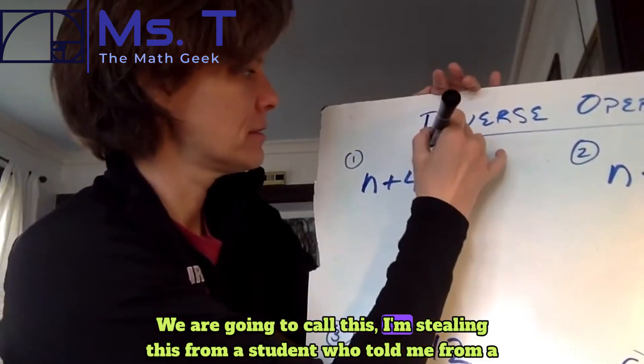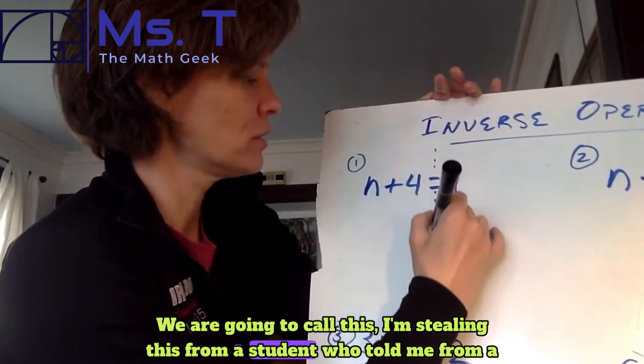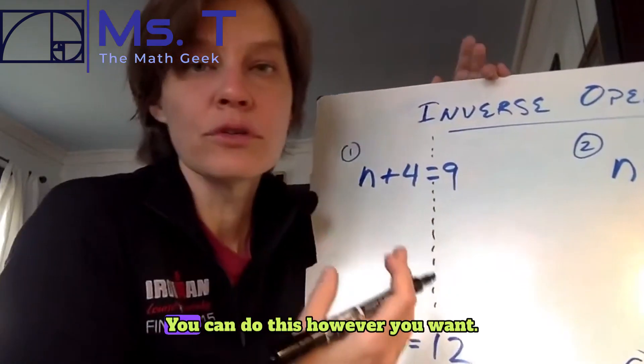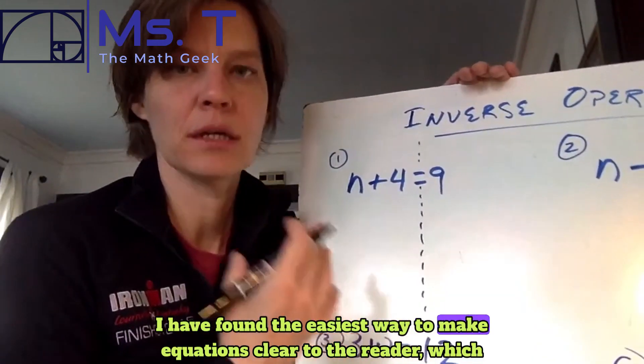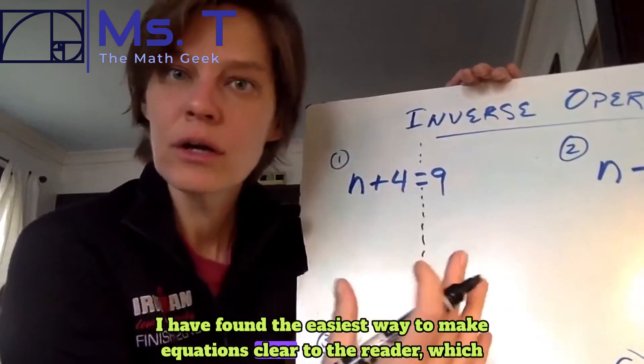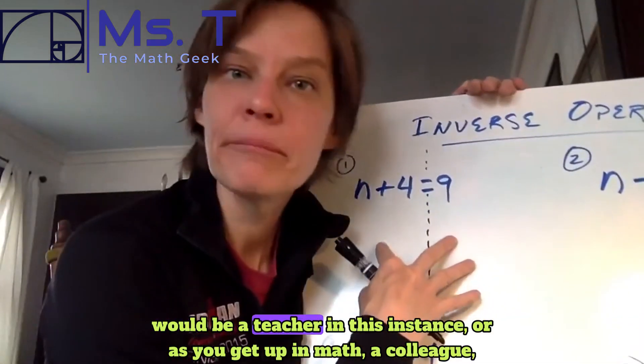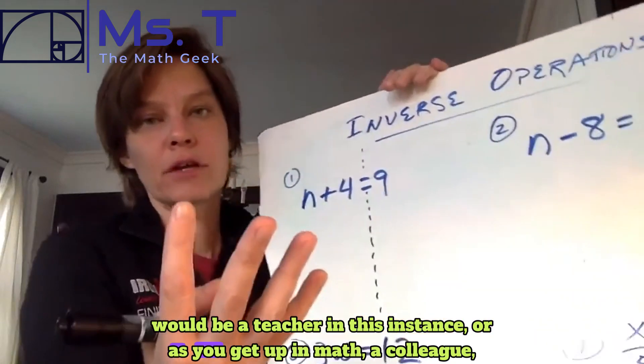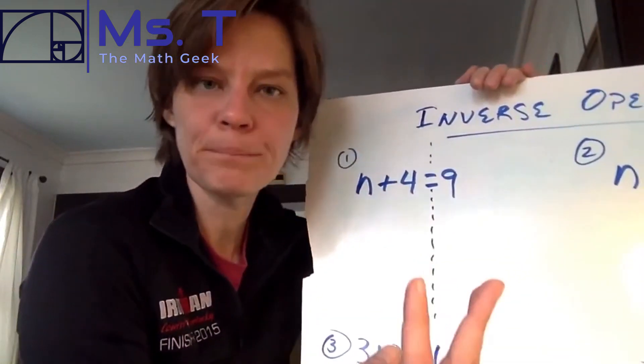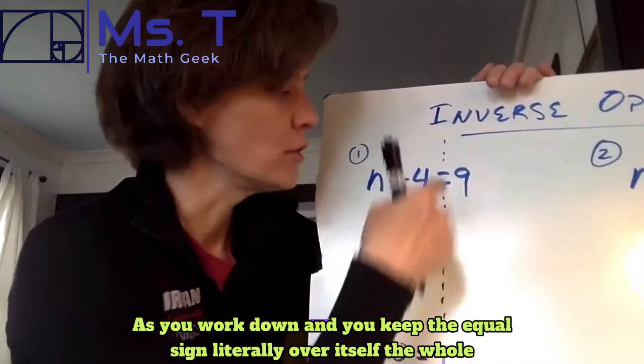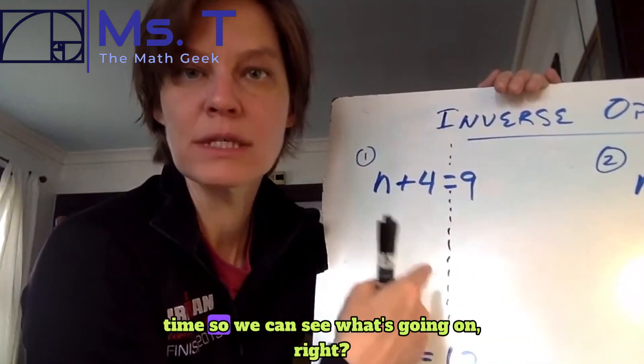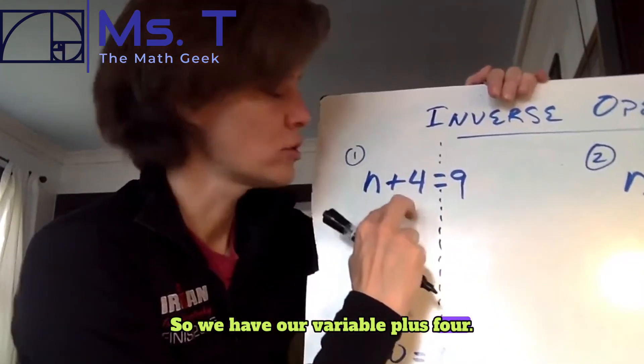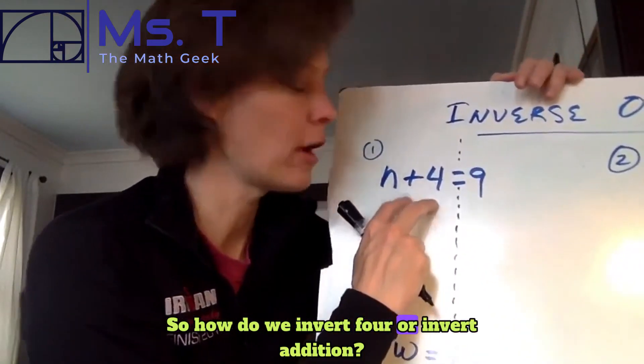So we are going to call this, I'm stealing this from a student who told me from a different teacher, the balance line. You can do this however you want. I have found the easiest way to make equations clear to the reader, which would be a teacher in this instance, or as you get up in math, a colleague, as you work down and you keep the equal sign literally over itself the whole time so we can see what's going on. So we have our variable plus four. So how do we invert four or invert addition?